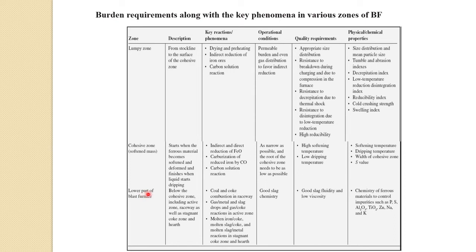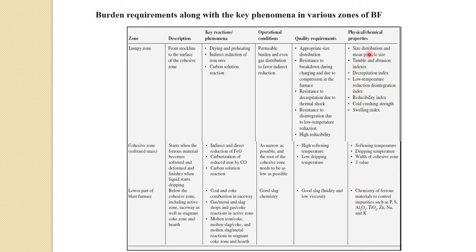In the lower part of the blast furnace, everything is in liquid state except the coke. This is below the cohesive zone, where the raceway and tuyeres are located. Coal and coke combustion in the raceway, gas-metal and slag drop reactions, gas-coke reactions, and molten iron-coke and molten slag-coke reactions all occur in this region. What you need is good slag chemistry, good slag fluidity, and low viscosity. The chemistry of the ferrous material must control impurities such as phosphorus, sulfur, alumina, titanium oxide, and silica.